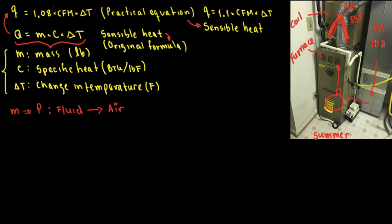The return air temperature is 80°F — that's what the thermostat checks. In summer, the furnace is not working, only the coil. Inside the furnace we have the blower or fan — the supply fan. The blower sucks and pushes air through the cold element, which is the coil. So in this case, we're talking about air.